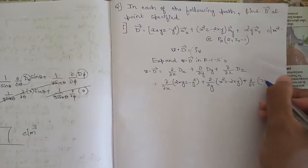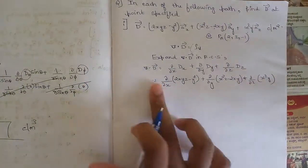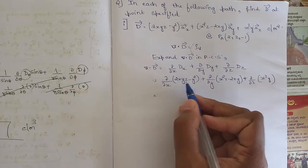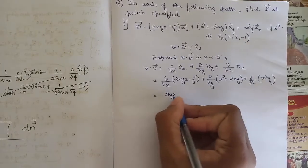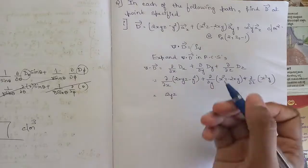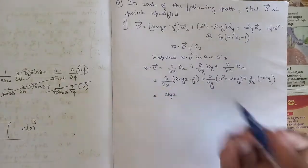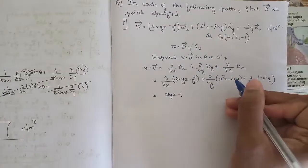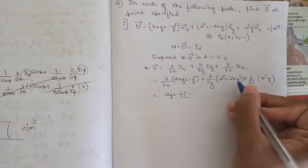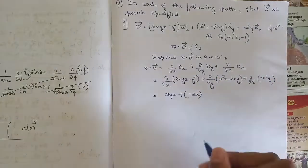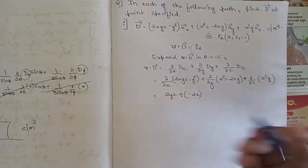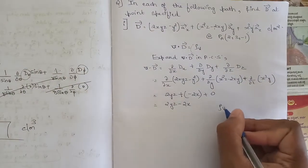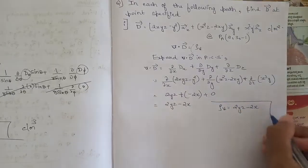...plus (∂/∂z) of x²y. Now we partially differentiate with respect to x, y, and z. For (∂/∂x) of (2xyz − y²): treating y and z as constants, 2yz times the derivative of x is 1, giving 2yz; the minus y² term goes to zero. For (∂/∂y) of (x²z − 2xy): the x²z term goes to zero, and the derivative of −2xy is −2x. For (∂/∂z) of x²y: since there is no z term, this equals zero. So the result is 2yz − 2x.